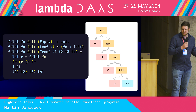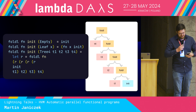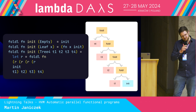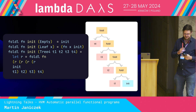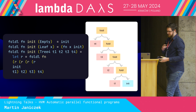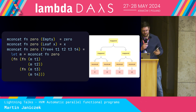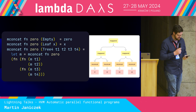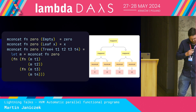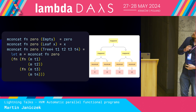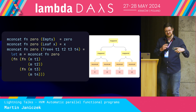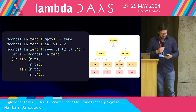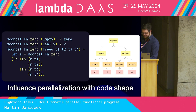Or you could use a monoid. If you have an associative operation, that is more balanced, and Bend can use that to actually run these functions at the same time. So yes, you can influence the parallelization with your code shape.